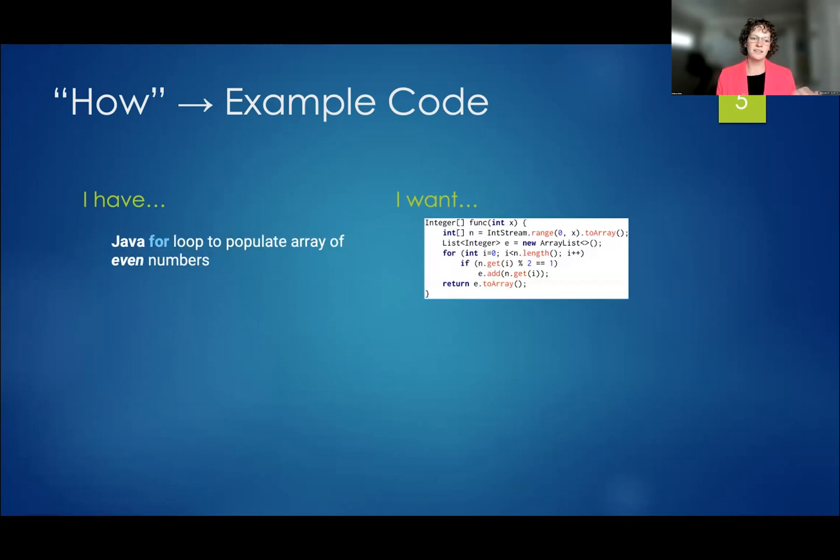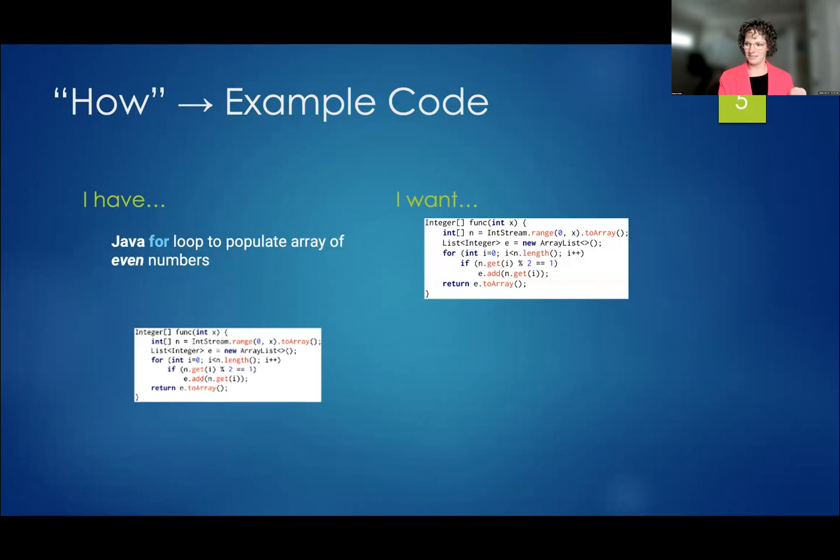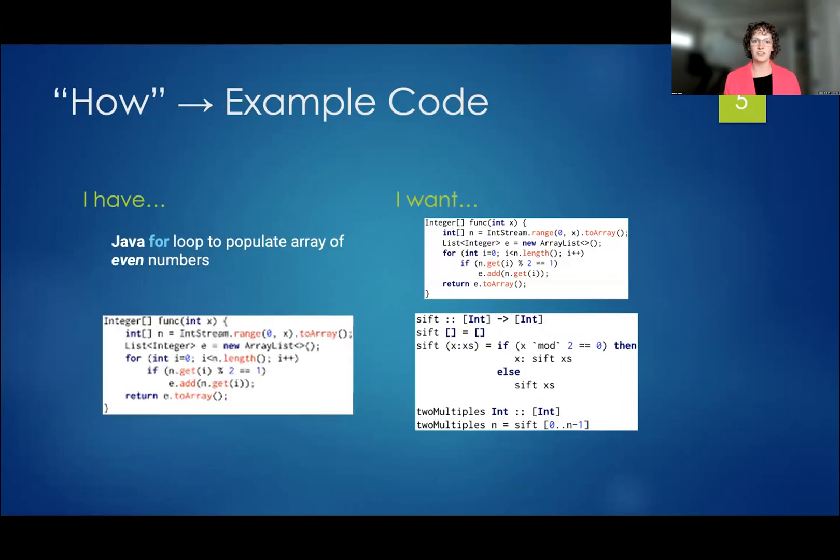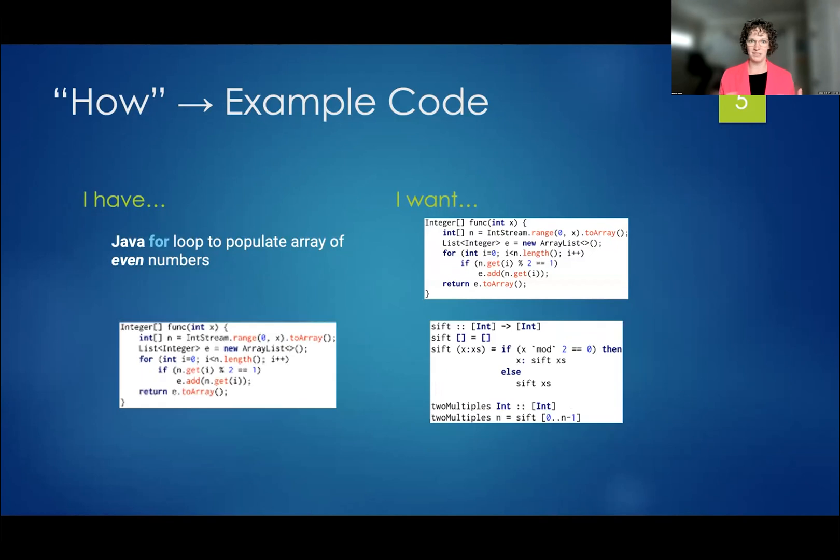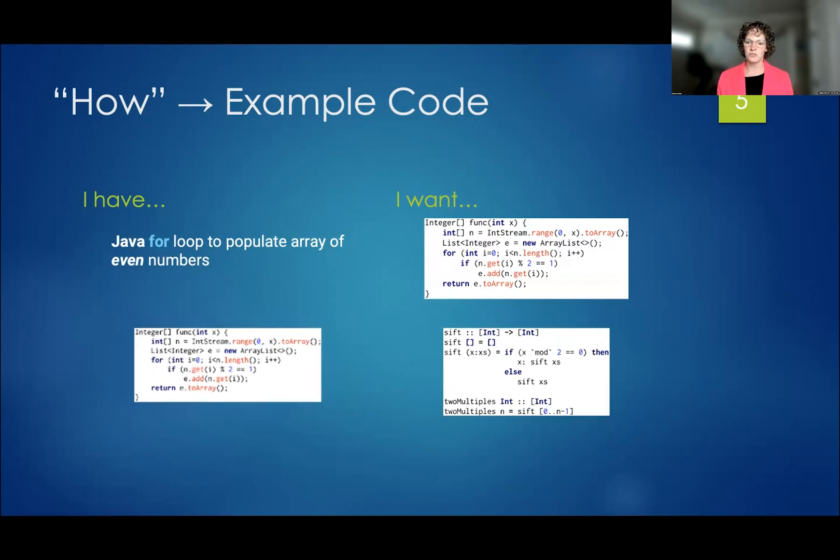Another, and this is supported well today. Another method of looking for example code could be to have a function as your query. And you want a function as your result. This would be a code-to-code search. This can be useful in education if you're looking for alternate implementations of the same algorithm. It can also be useful for learning a new programming language or doing translation.